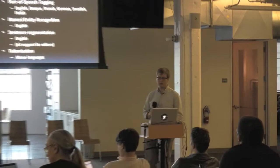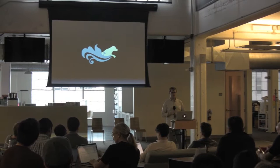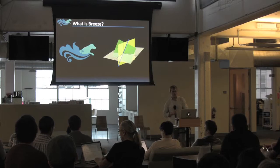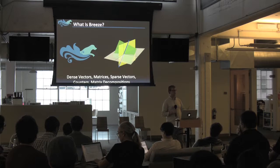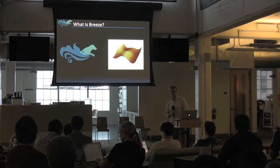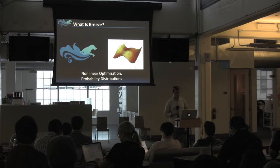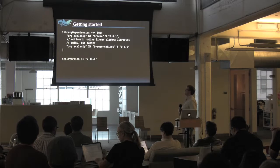I'm going to move on to Breeze. Breeze isn't strictly a natural language processing toolkit — instead it's a linear algebra and scientific computing library. It provides basic linear algebra like dense vectors, matrices, sparse vectors, sparse matrices, and matrix decompositions. It also has non-linear optimization, probability distributions, and linear optimization. The slides will be posted so you can pull the dependencies.